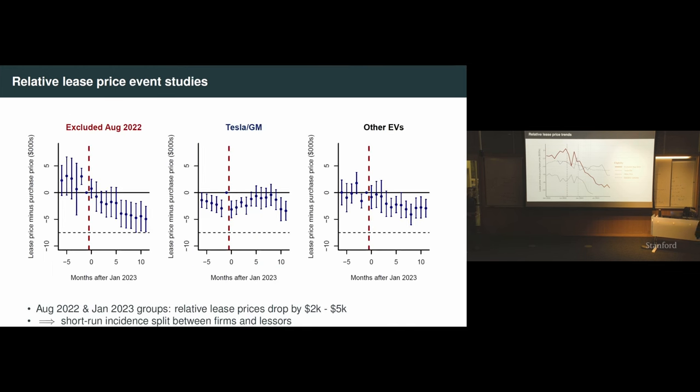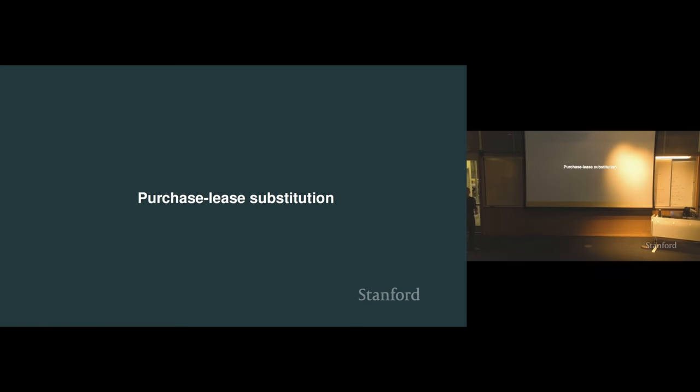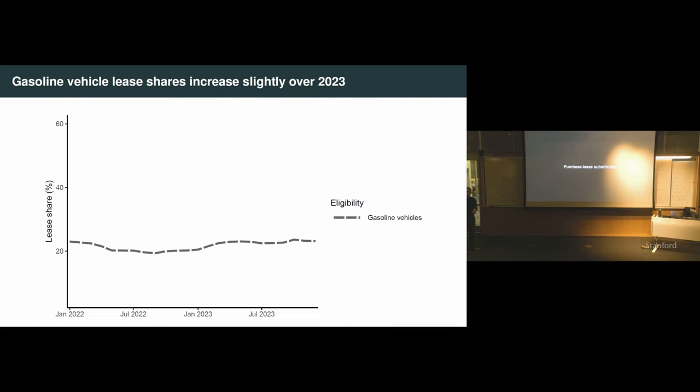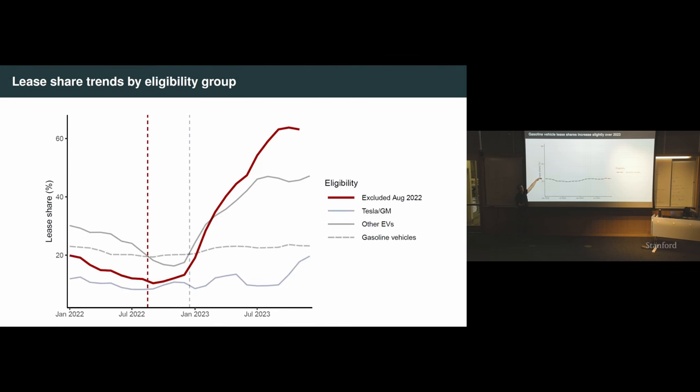In January of 23, that's when this new Section 45W tax credit to the lessor takes effect. So all of these folks are now seeing that suddenly as of January, they can pocket another $7,500 if they lease cars. The question is, are they passing that through to consumers in the form of lower lease prices or are they just keeping it for themselves? And the answer is, as you can see, lease prices go way down for these Honda's, Kia's, BMW's, et cetera, over the months of 2023, and even much more so than the gasoline vehicles.